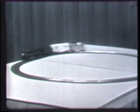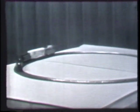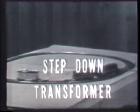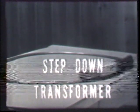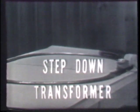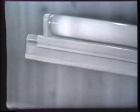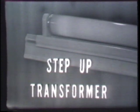If the transformer reduces the voltage, as in the case of the train, it's called a step-down transformer. Whereas if the transformer increases the voltage, as in the case of the fluorescent light, it's called a step-up transformer.